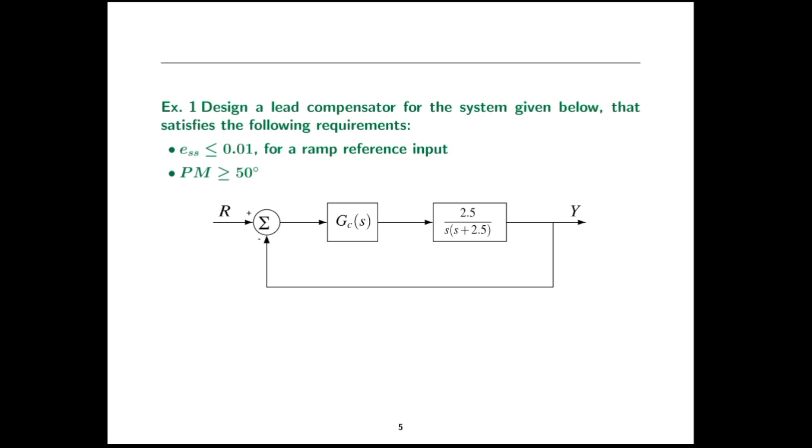So let's do an example. We have this plant, and what we'll do is design a lead compensator so that the steady state error to a ramp input is less than or equal to 0.01, and the phase margin is greater than or equal to 50 degrees.